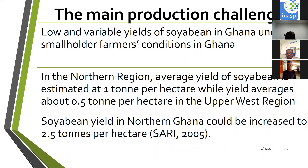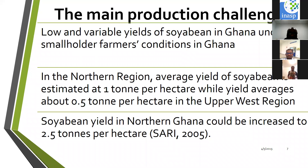The main production challenge for legume production across the savannah zones is low and variable yields from existing varieties. In the northern region, the climate is unimodal — only one rainy season throughout the year, sometimes lasting only three months. Farmers' main source of livelihood is growing green legumes and minor vegetables for food and income.